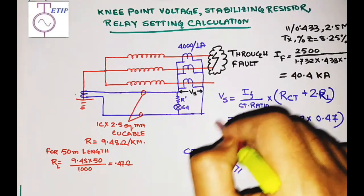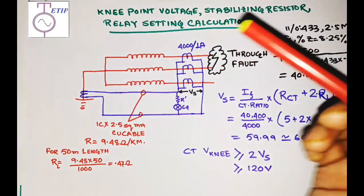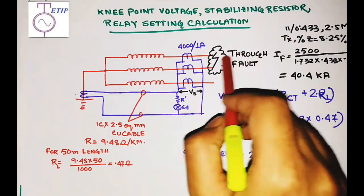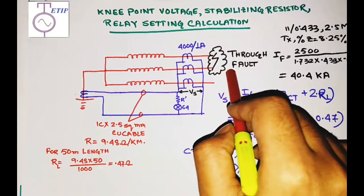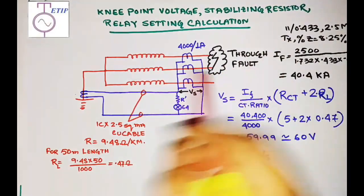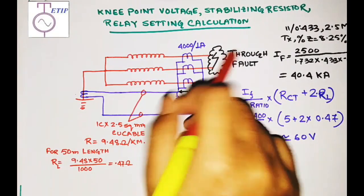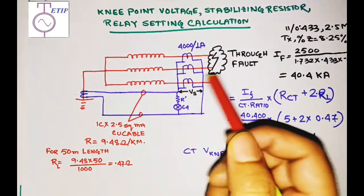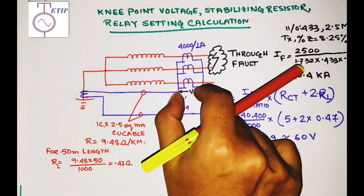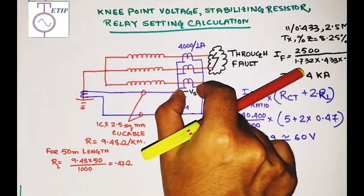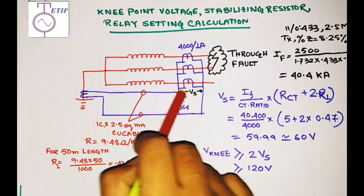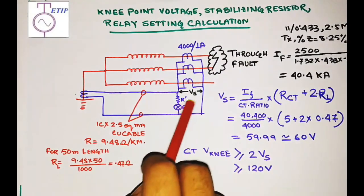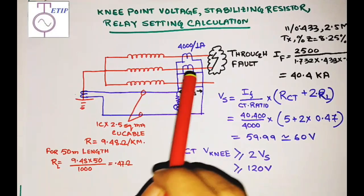But what if there is a through fault or phase fault outside the restricted earth fault zone? Suppose there is a line-to-line fault or three-phase fault — then a huge current will flow through these CTs. When the huge current flows through the CT, the CT gets saturated, and due to saturation a voltage appears across these CTs.